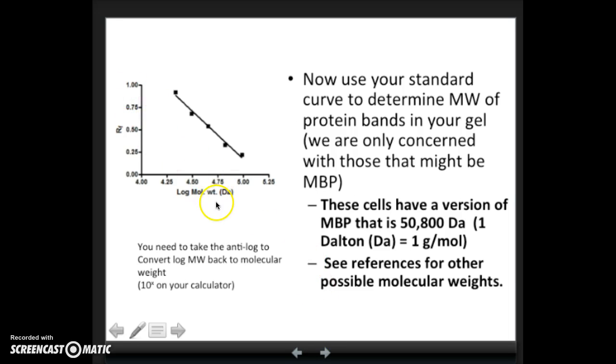Here's what an actual standard curve should look like. Here's our RF versus our log molecular weight. Then we can make a trend line and determine the equation of the trend line. We can use that standard curve to determine the molecular weights of the protein bands in your gel. Remember, we're only interested in those bands that we think might be our maltose binding protein. You don't have to measure every band you see. Pick out ones that you are interested in and measure those. Now you'll have the RF of your unknowns and you can use the equation of this line and determine the log of the molecular weight that's given by this standard curve.